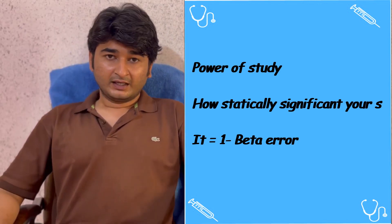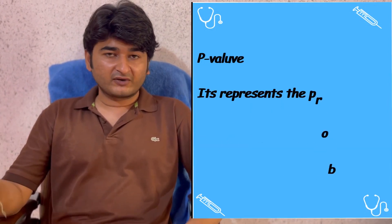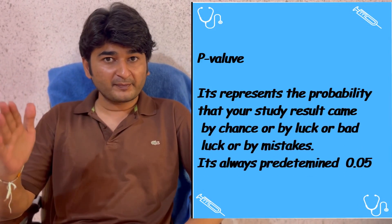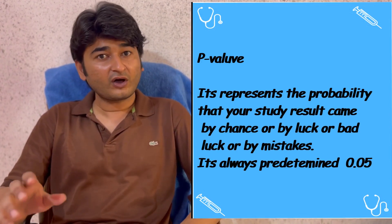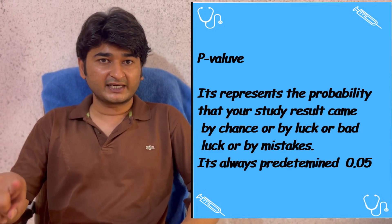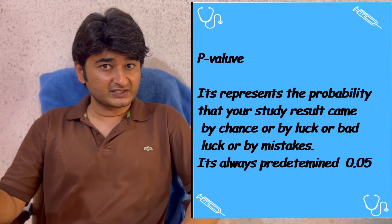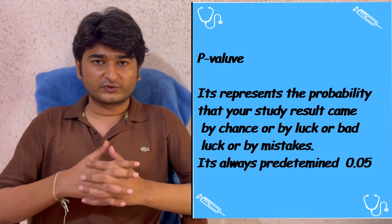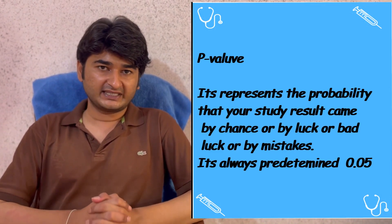Many confuse p-value with the power of study — it is not that. P-value represents the probability that your results came by chance, by luck, or by mistake. In any study, the p-value is pre-decided at 0.05. If your p-value is more than 0.05, the study will not be statistically significant.